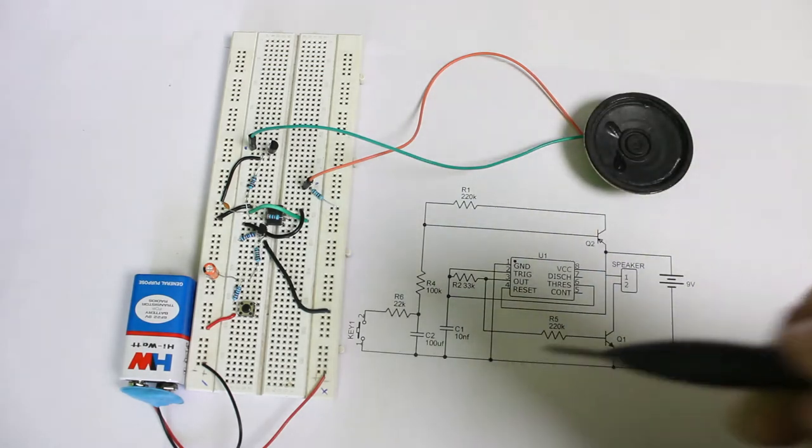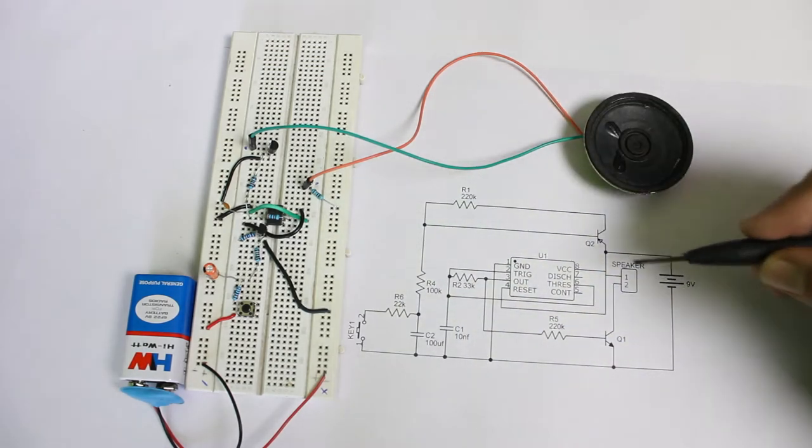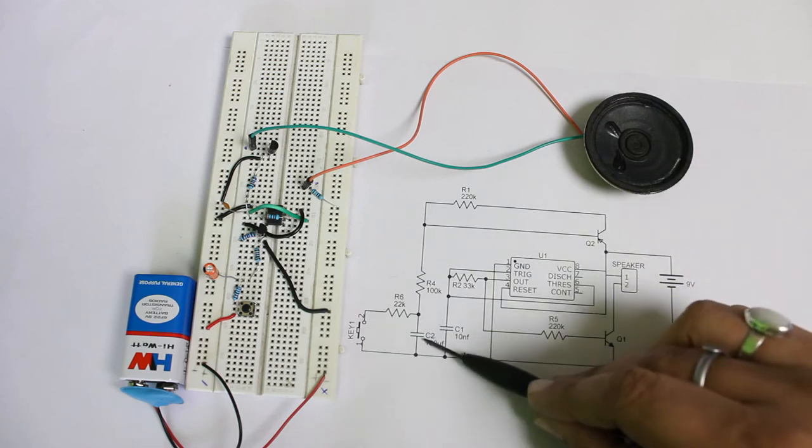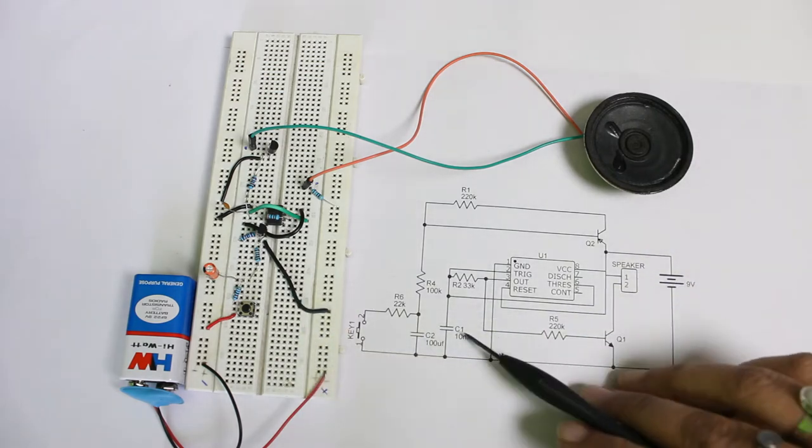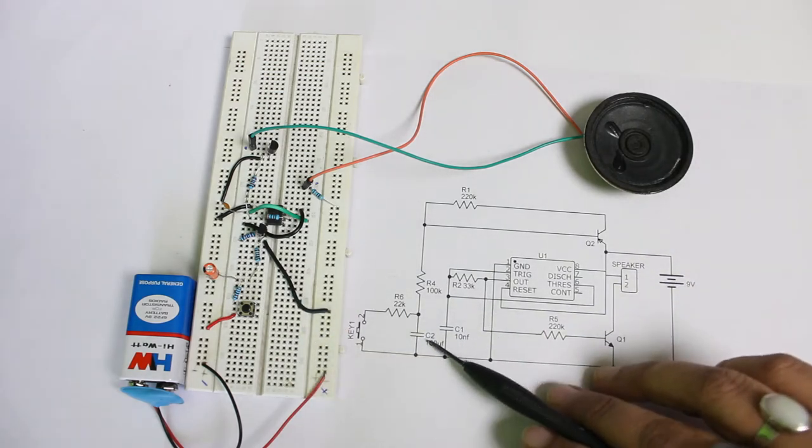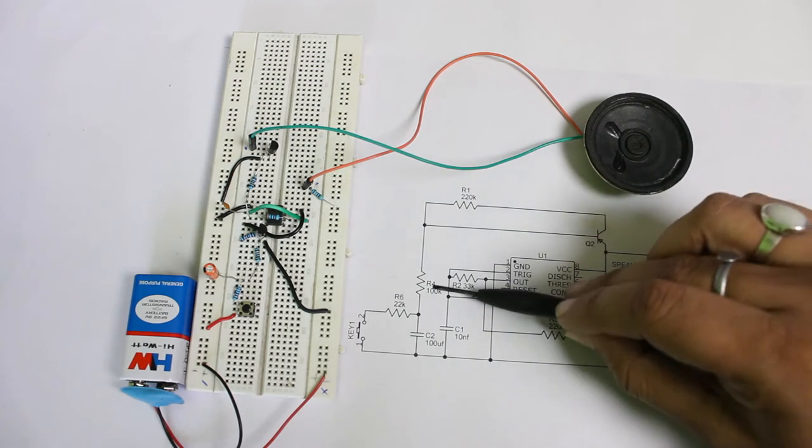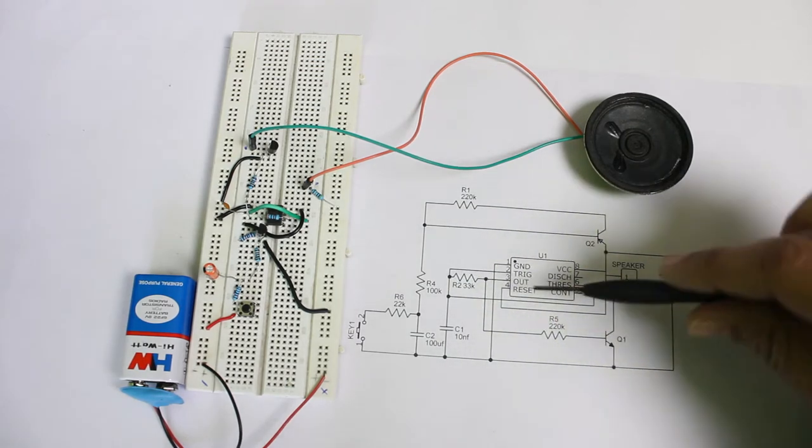The capacitor C2, which is right here, is fully charged. This capacitor C2 is fully charged through a 220 kilo ohm and 100 kilo ohm resistors.